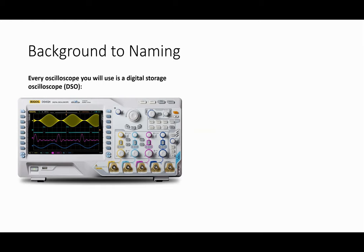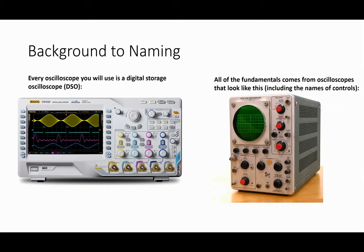When we're using the scopes, you'll notice a lot of the naming conventions — so like time-base, vertical scale, probe coupling. Almost all of these features actually came from another generation of oscilloscopes that you haven't used, that look something like this. Most of the naming for the features came because of how scopes like this were designed. This is a relatively old scope.